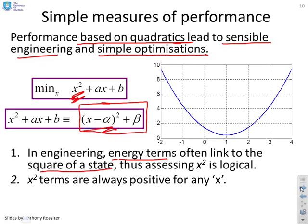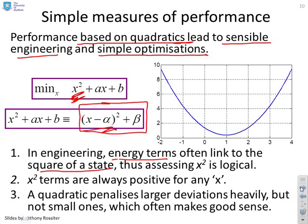x squared terms are always positive for any x, so as long as you set up your performance index to look something like this, x minus alpha squared plus beta, you can ensure that your performance index is positive for all x, which again makes good engineering sense. You'll also notice that quadratics penalise larger deviations heavily, but not small ones. So for example, if you're within the region of the optimum, here I've marked it as one, then sometimes you don't care if you deviate a little bit around one, it doesn't make that much difference to your engineering costs. And you'll see the quadratic doesn't particularly penalise small deviations about the optimum. But what it does do is it penalises heavily larger deviations.